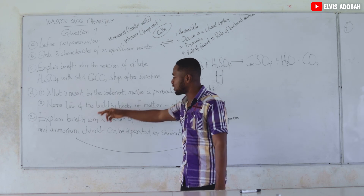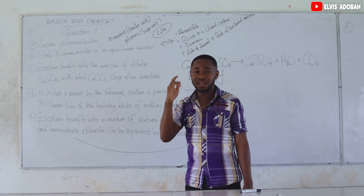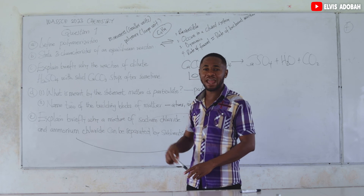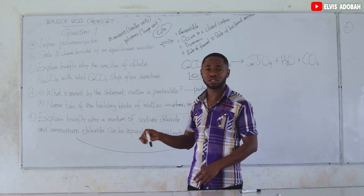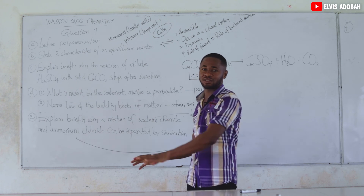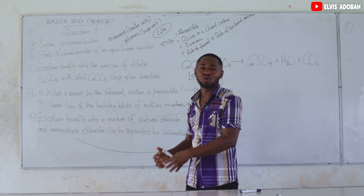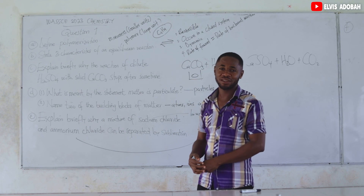This covers the A to E part of question one. In our next video we are going to consider the F to J part of the question, so that question one will be complete. Then we move on to questions two, three, four, and five. Thank you.